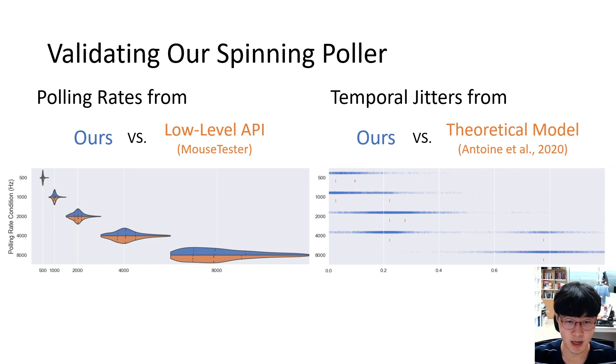We validated its polling rate and temporal jitter accuracy by comparing our measurements with those from the low-level API and the theoretical model. Our validations concluded that our parameters were sufficiently fast and rendered the overall cursor jitter characteristics correctly.